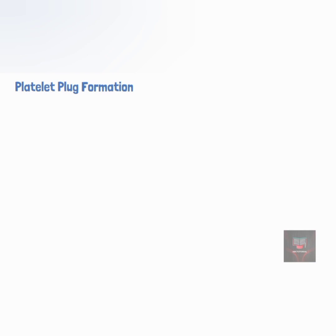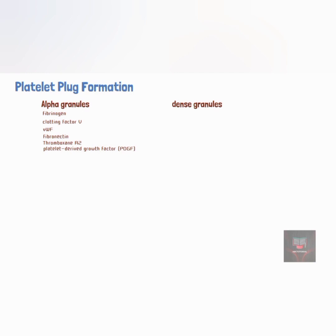Even though they are small in size, platelets store an impressive array of chemicals in their granules. Platelets generally have two types of granules: alpha and dense granules. The alpha granules contain fibrinogen, clotting factor 5, von Willebrand factor (vWF), fibronectin, thromboxane A2, platelet-derived growth factor (PDGF), and transforming growth factor beta (TGF-beta). The dense granules contain adenosine diphosphate, adenosine triphosphate (ATP), calcium, serotonin, and epinephrine.